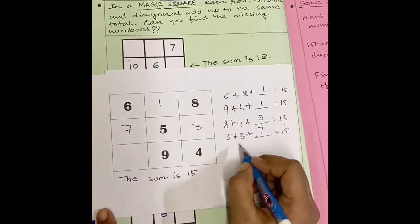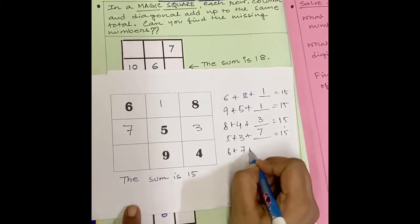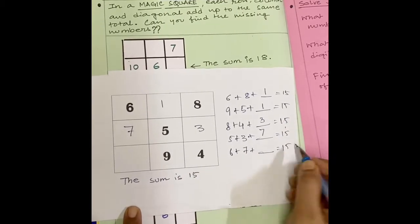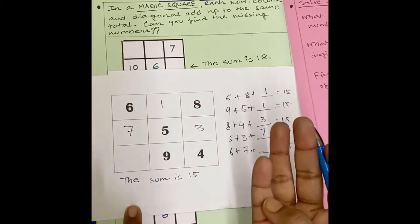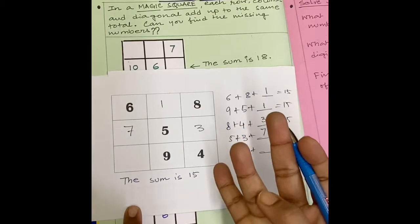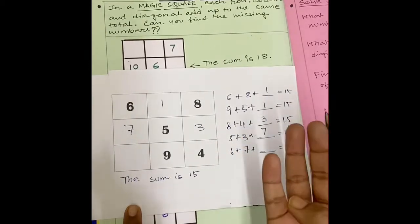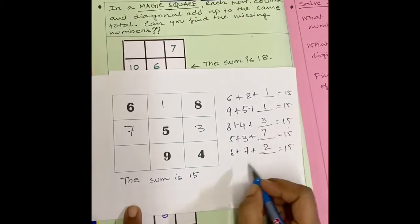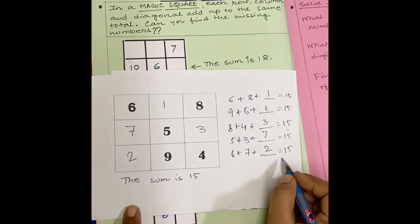Now, 6 plus 7 plus how much to make 15? 6, 7, 8, 9, 10, 11, 12, 13, 14, 15. So, 6 plus 7 plus 2 will make 15.